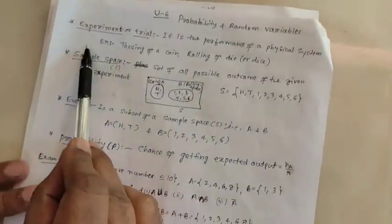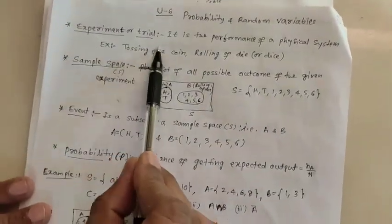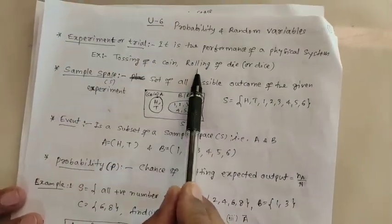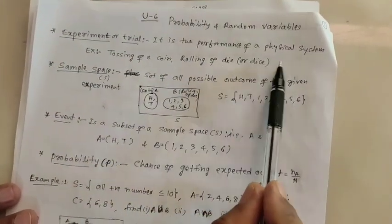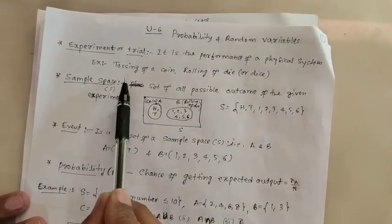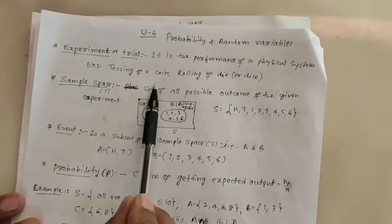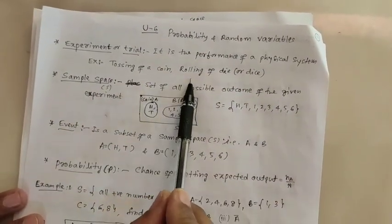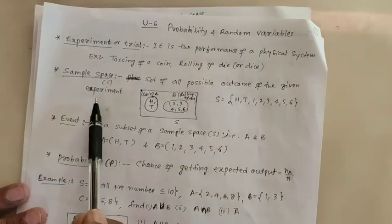Today I am going to explain about probability and random variable. First, what is experiment or trial? It is the performance of the physical system. For example, tossing of a coin or rolling of a dice.